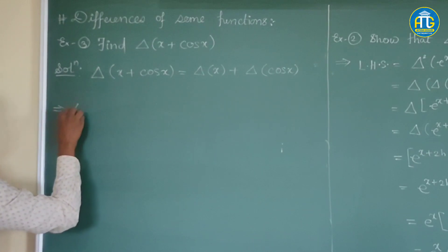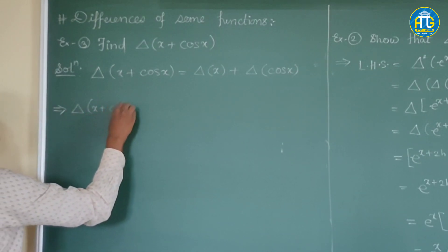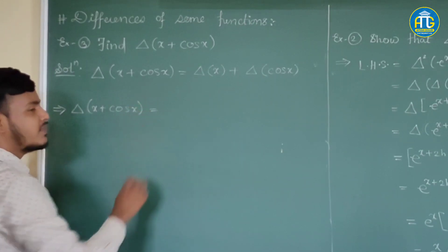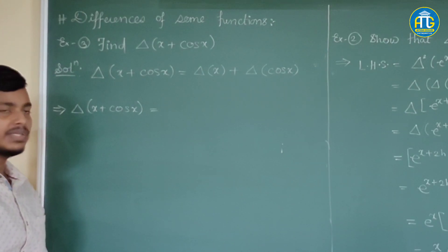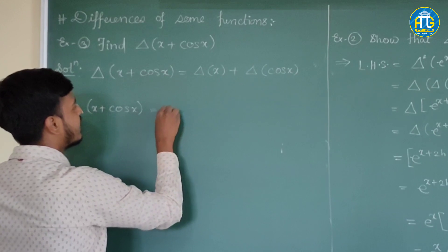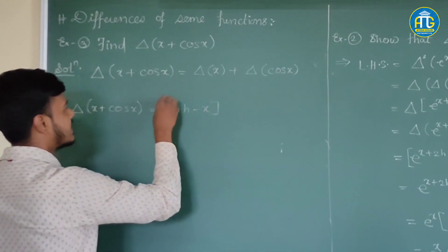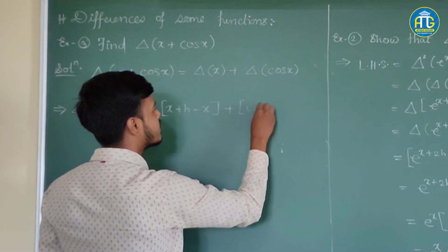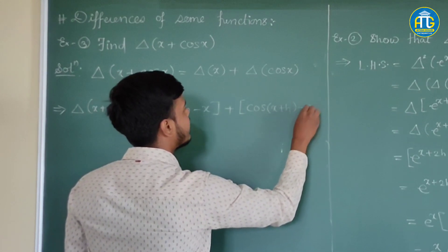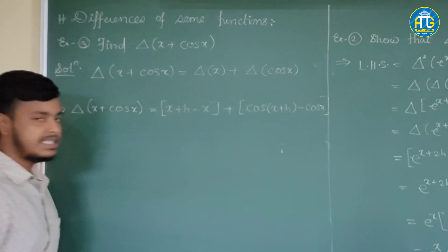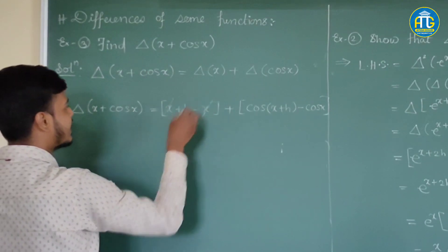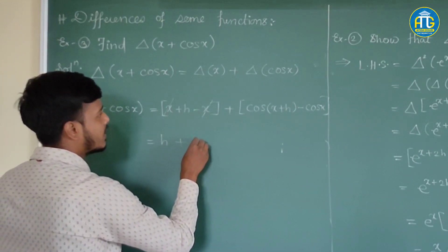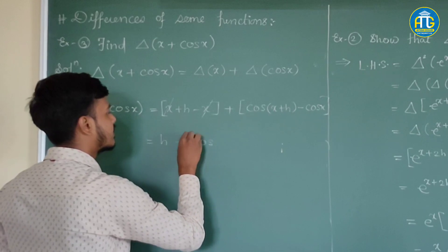The interval of differencing is not given, so we consider it to be h. Forward difference of x is (x+h) − x. Forward difference of cos x is cos(x+h) − cos x. The x terms cancel, leaving h + cos(x+h) − cos x.